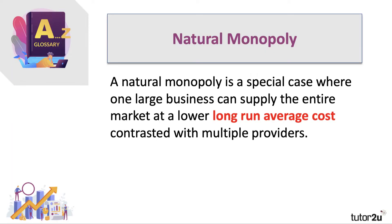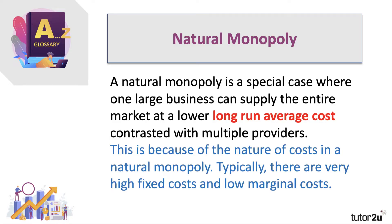So what do we mean by a natural monopoly? It's a special case where one firm, one large business, one big supplier, can supply the entire market at a lower long-run average cost than if the market was split up with multiple providers. One large business can operate at a lower unit cost — it can be more productively efficient.